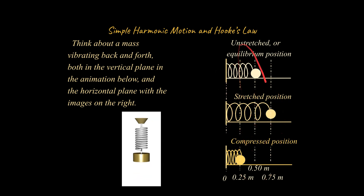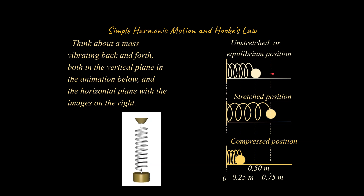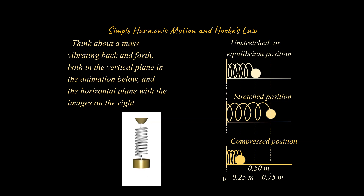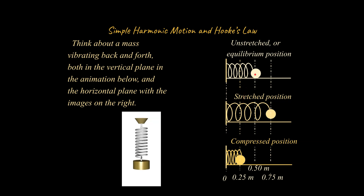Thinking about these three scenarios in terms of physics concepts we've covered: this is the unstretched or equilibrium position. If you stretch it out, it will pass through the equilibrium position, come to a stop in the compressed position, go back through equilibrium, out to the stretched position, and repeat. In a real-world example there's a dampening process where energy is lost as heat, sound, and friction. On a frictionless surface it would repeat forever. A compressed spring has stored potential energy; at the middle position it has kinetic energy; at the stretched position it has stored elastic potential energy again.